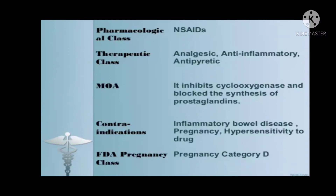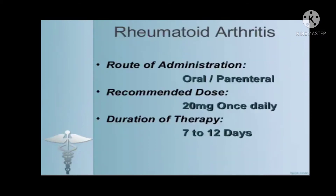Regarding contraindications, piroxicam is not used in inflammatory bowel disease, pregnancy, or hypersensitivity to the drug. According to the FDA pregnancy classification, it lies in category D. It is used in rheumatoid arthritis.